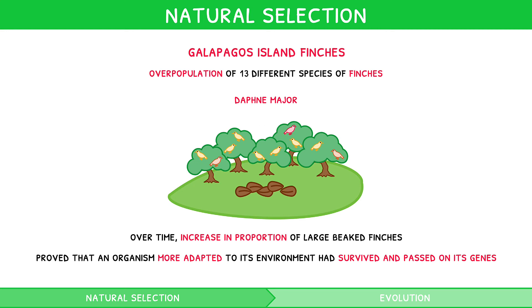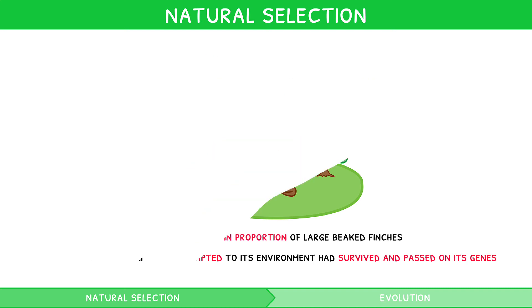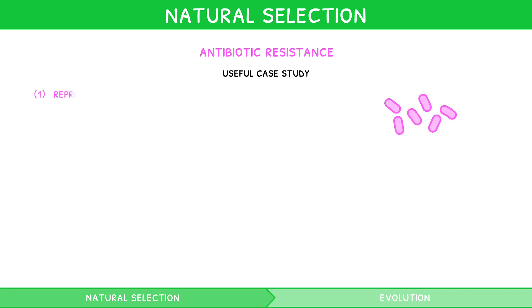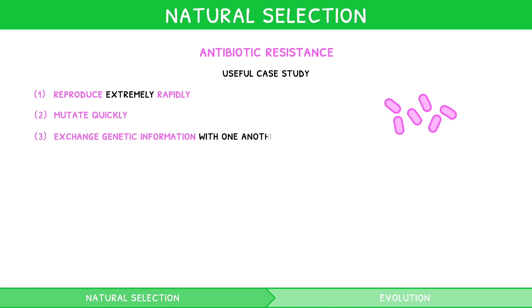Another example of natural selection that often appears in IB Biology exams is antibiotic resistance. Bacteria are a useful case study, as they can reproduce extremely rapidly, mutate quickly, and exchange genetic information with one another via a process known as horizontal gene transfer, which does not require reproduction.